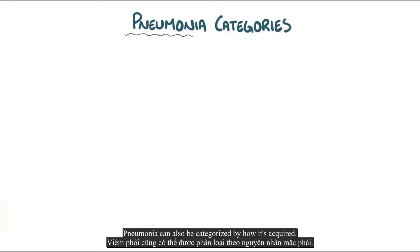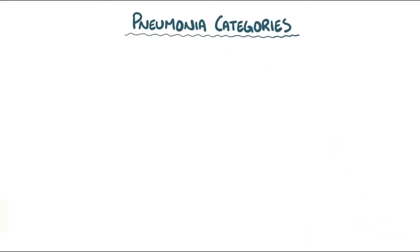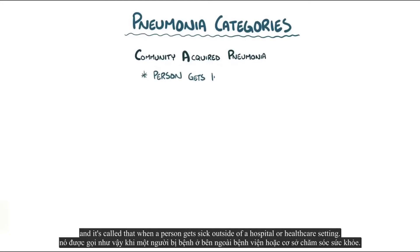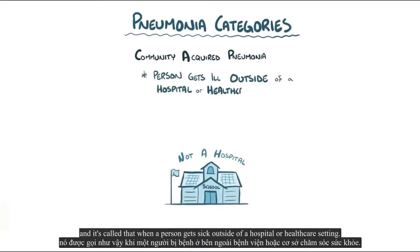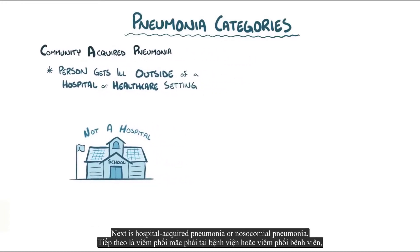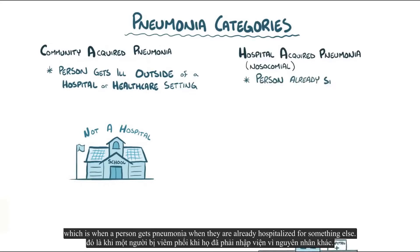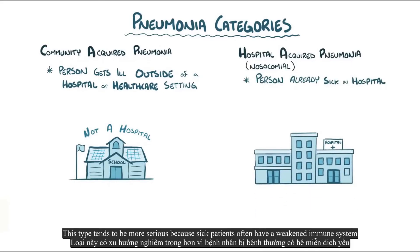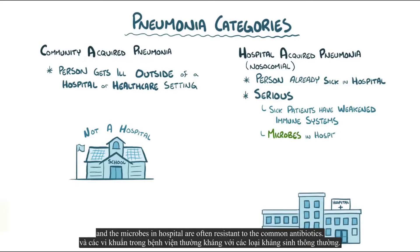Pneumonia can also be categorized by how it's acquired. The most common is community-acquired pneumonia, when a person gets sick outside of a hospital or healthcare setting. Next is hospital-acquired pneumonia, or nosocomial pneumonia, which is when a person gets pneumonia while already hospitalized for something else. This type tends to be more serious because sick patients often have a weakened immune system, and the microbes in hospitals are often resistant to common antibiotics.